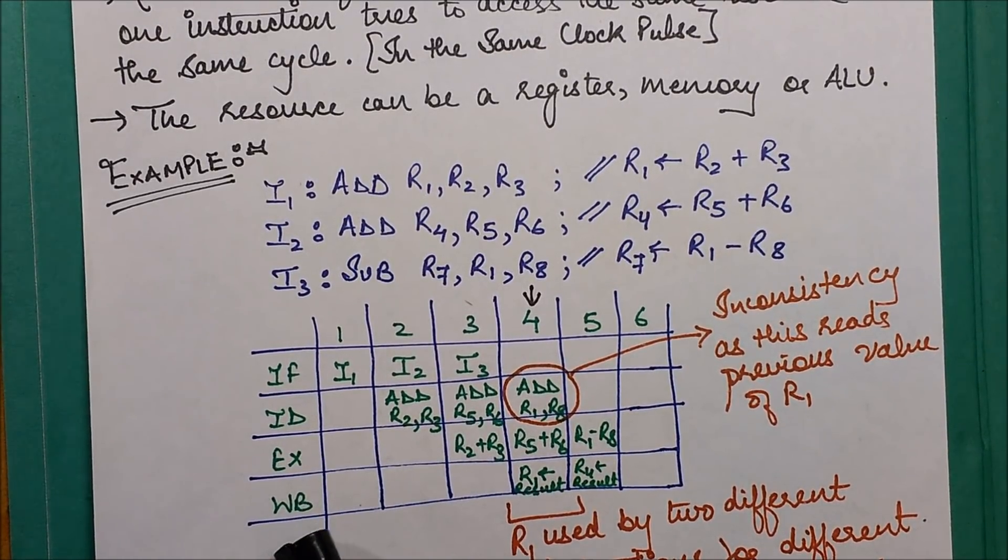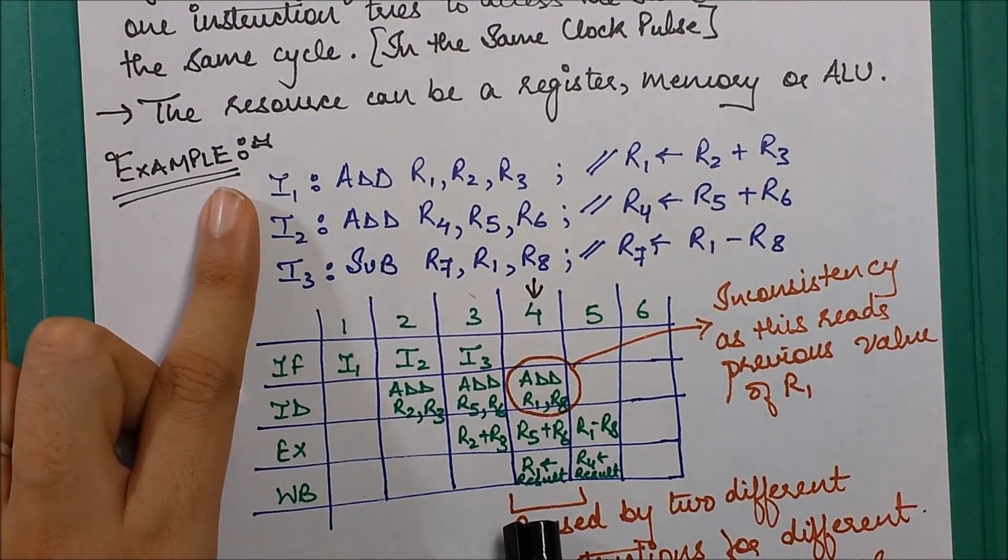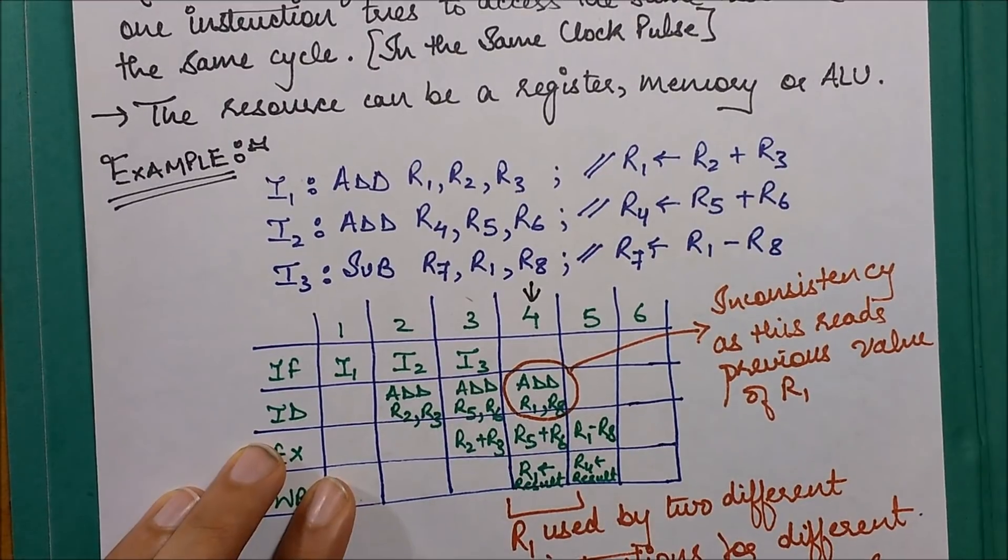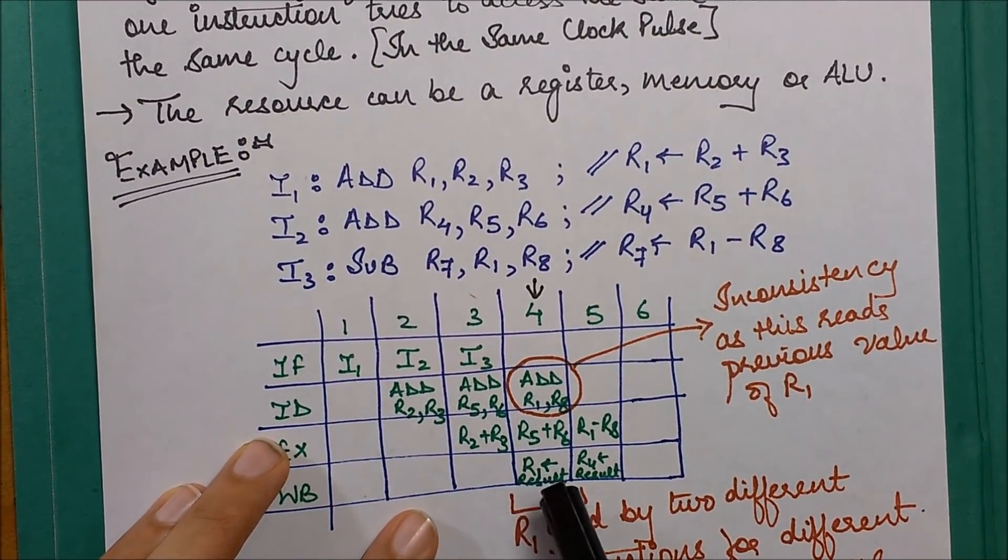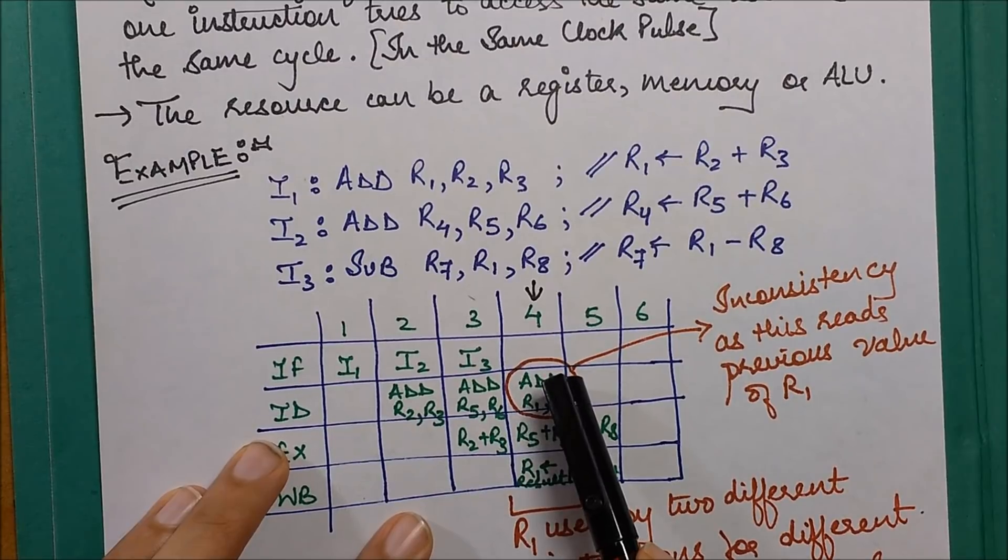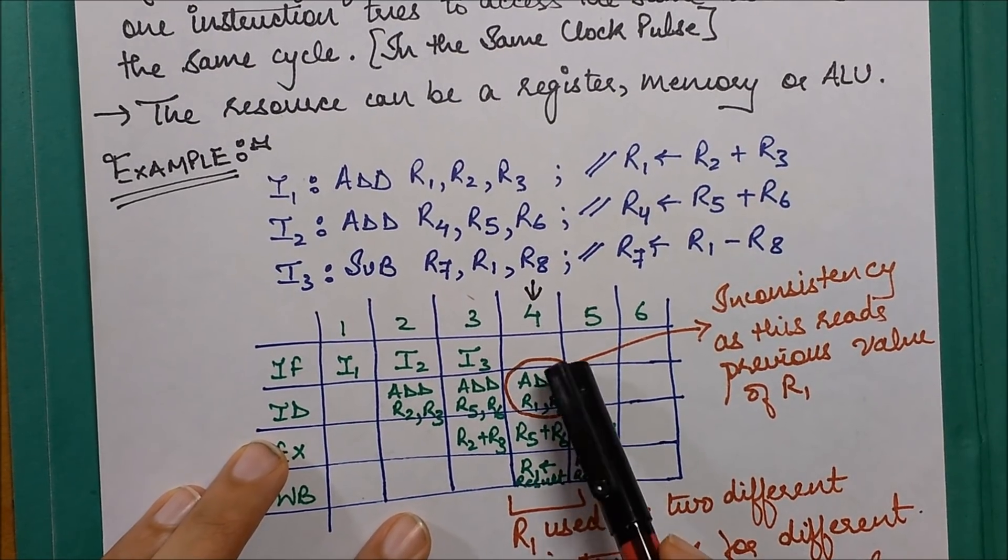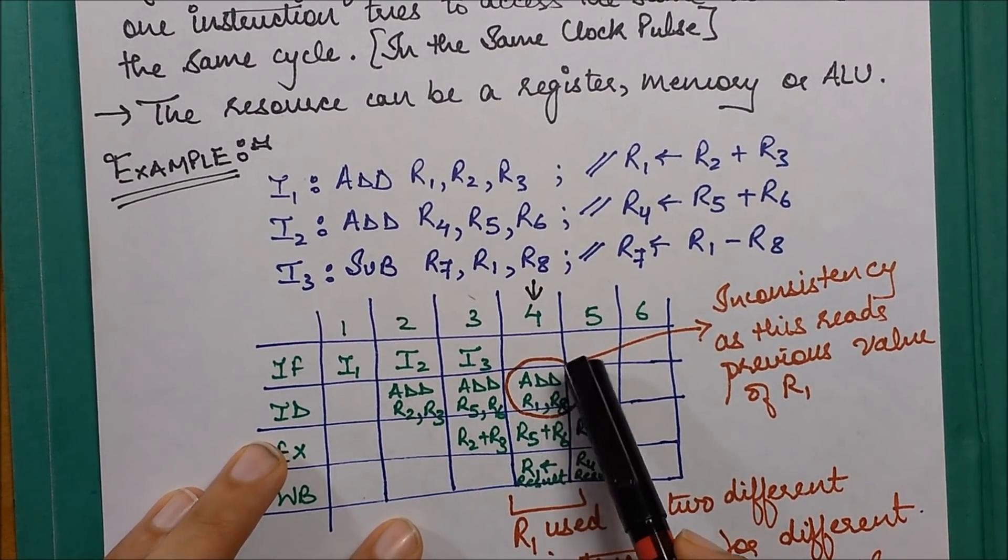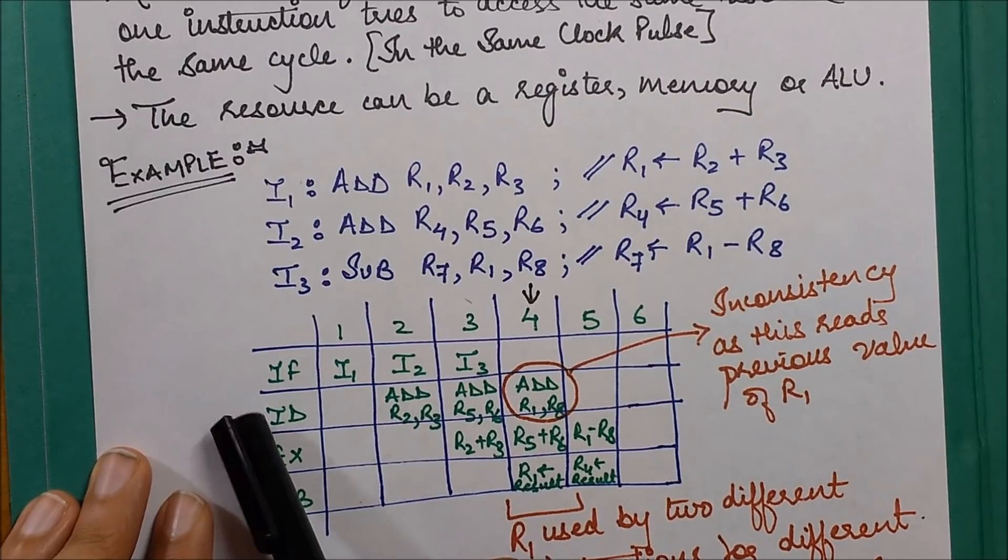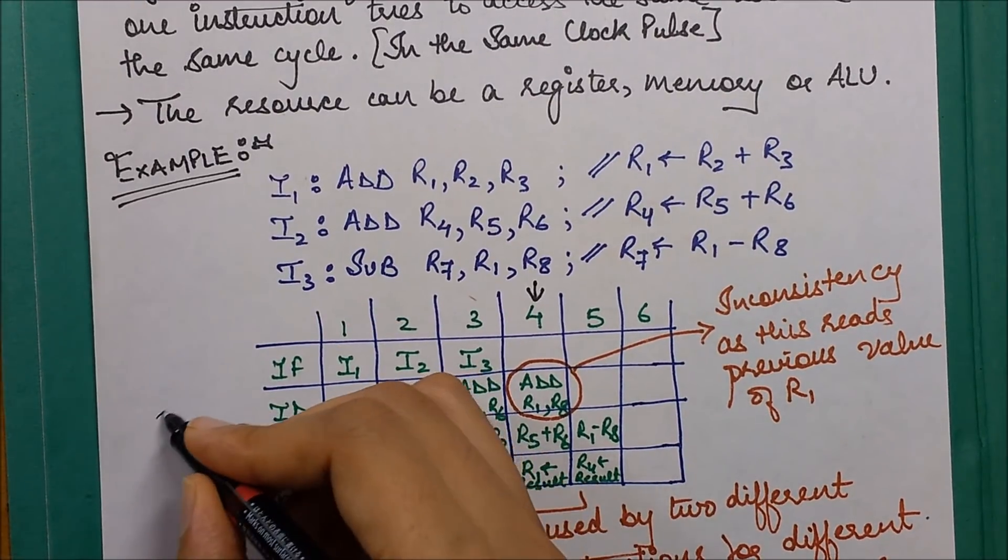This R2 plus R3 will eventually be stored in R1, so you write down that R1. Now if you analyze this clock pulse, this is very important. At this point, you're storing the result, and here you are decoding this instruction and fetching the operands. This is a combination of instruction decode and operand fetch - ID and OF.